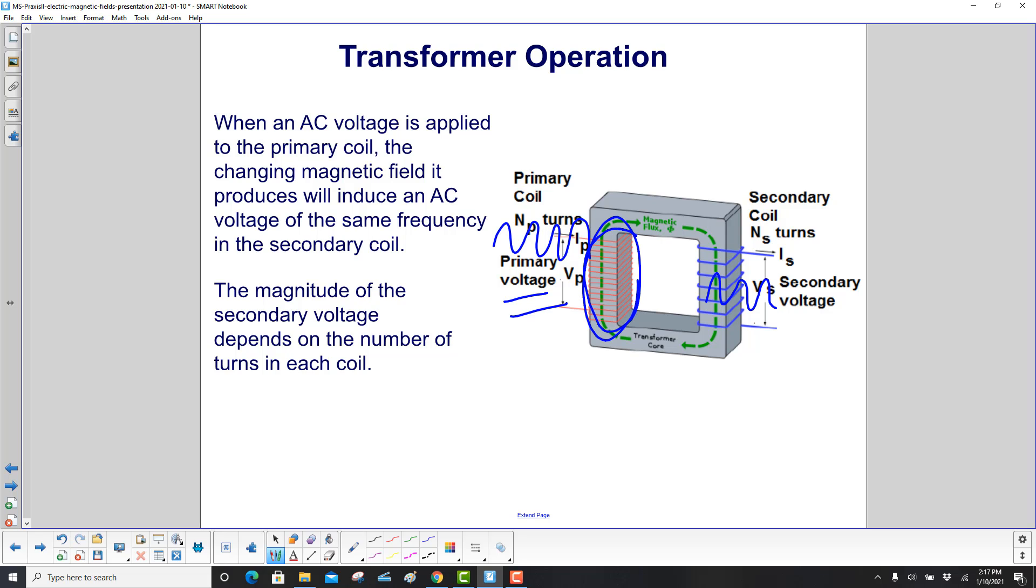Perhaps you can see there's a lot of turns here in the primary coil, on the secondary not so many. And this is what's going to change the magnitude of the voltage.